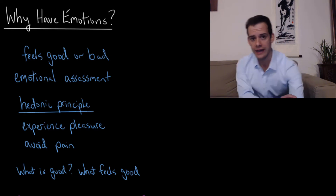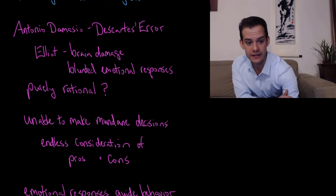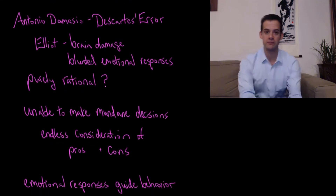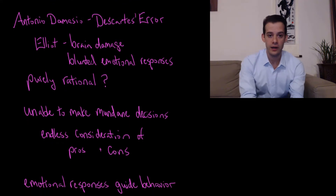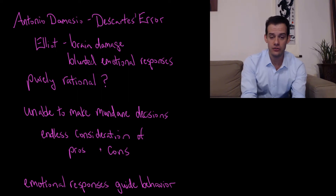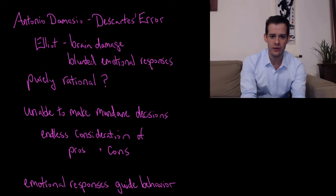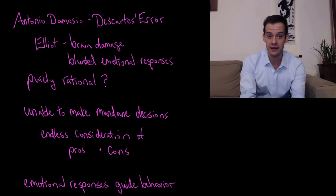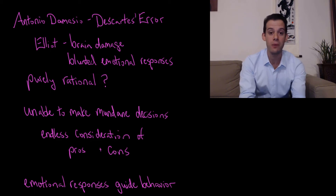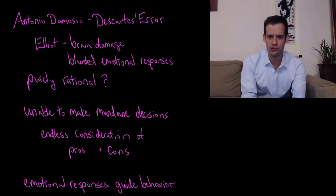Let's look at a case study of somebody who didn't have these emotional responses. This brings us to a book called Descartes' Error by Antonio Damasio. Damasio talked about a patient of his named Elliot, who suffered from brain damage, and as a result his emotional responses were blunted — he didn't have emotional reactions to things. You might think this would mean Elliot would behave purely rationally, but it turns out that Elliot had trouble making decisions.